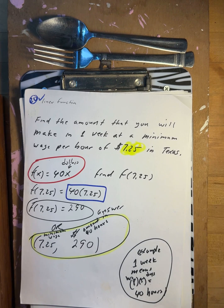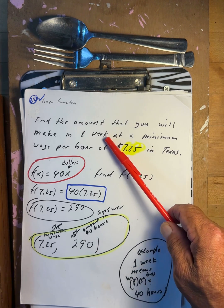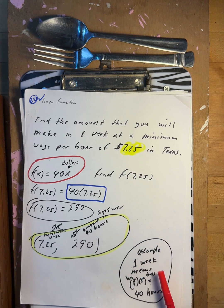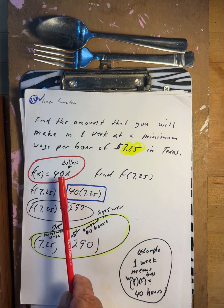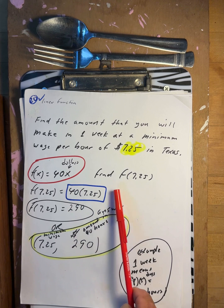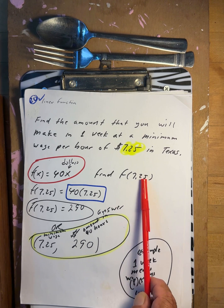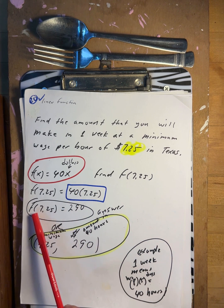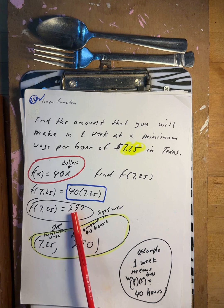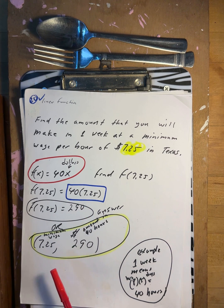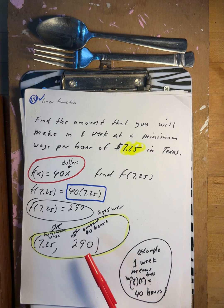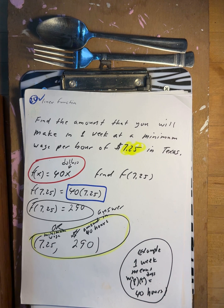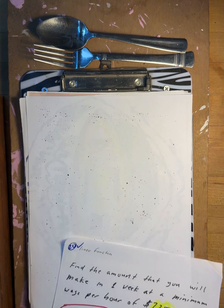Find the amount you will make in one week at minimum wage of $7.25 in Texas. One week is 8 hours times 5 days equals 40 hours. 7.25 times 40 equals $290. So at $7.25 per hour, you make $290 per week.